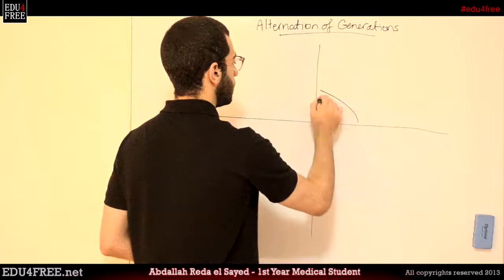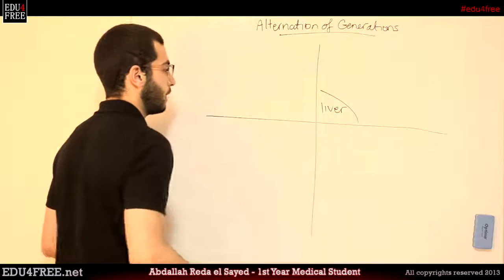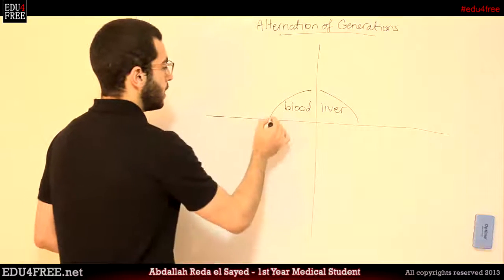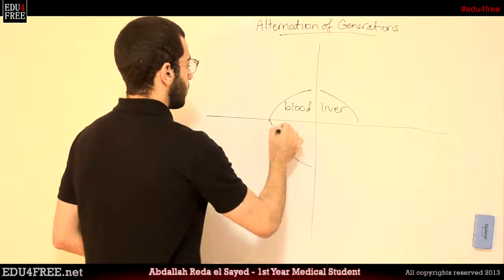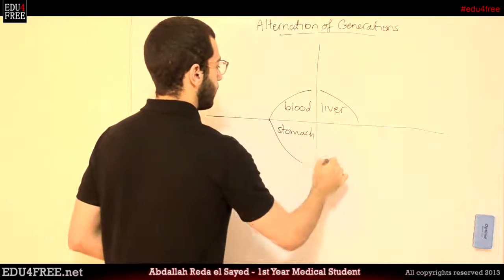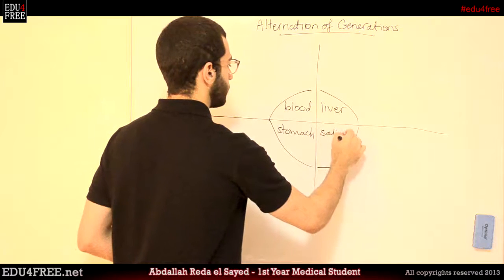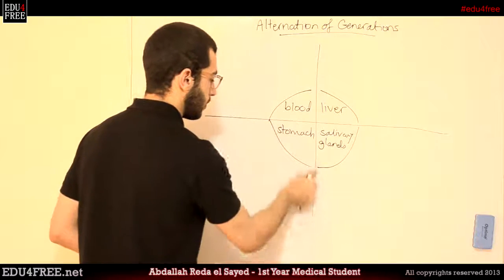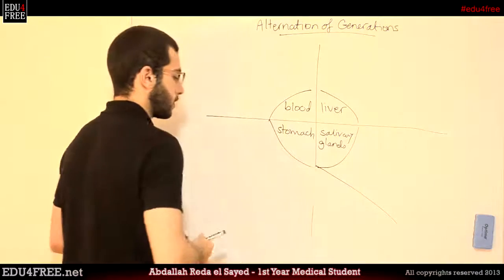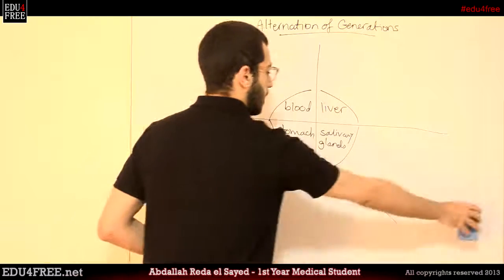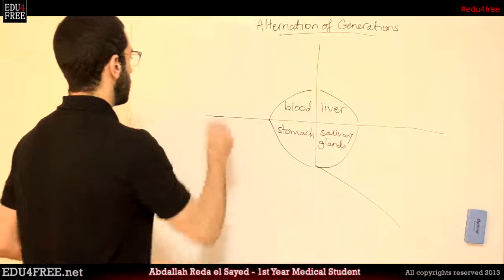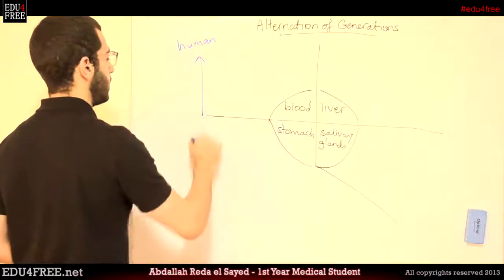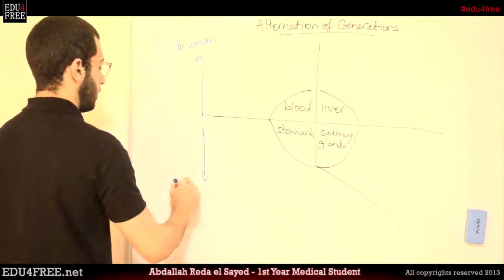The first part is in the liver of the human, then in the blood of the human, then in the stomach of the mosquito, and finally in the salivary glands of the mosquito. The first two parts occur in the human and the last two occur in the mosquito.